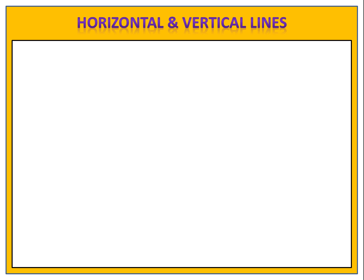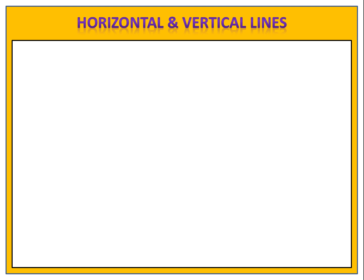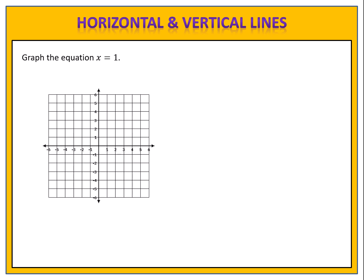In the second part of this lesson, we're going to focus on graphing horizontal and vertical lines. For the equation y equals 3, we know it's a horizontal line that passes through the y-axis at 3. We begin by plotting a point on the y-axis at 3 and then draw the horizontal line through it. For x equals 1, we plot a point on the x-axis at 1 and draw the vertical line through it.